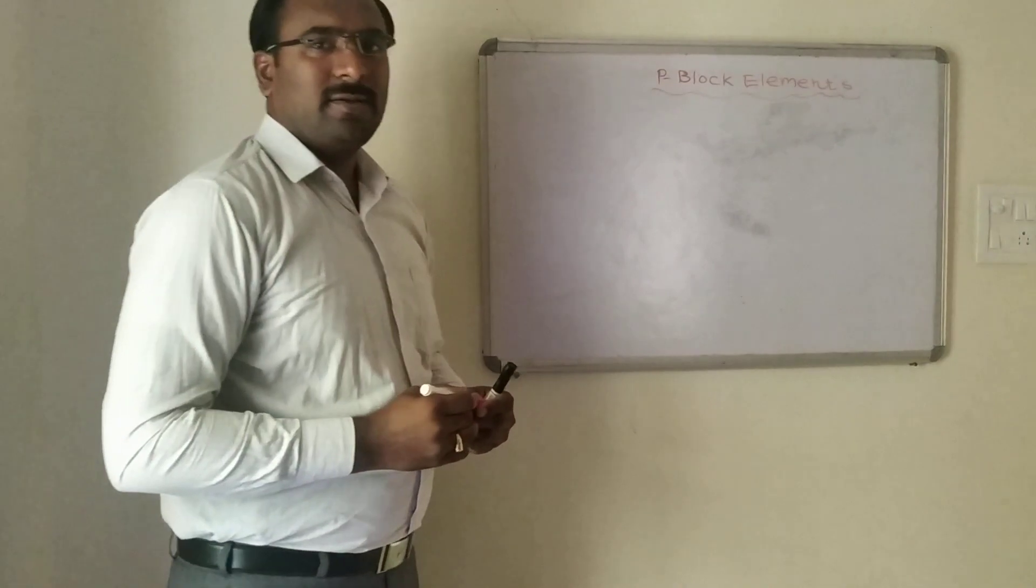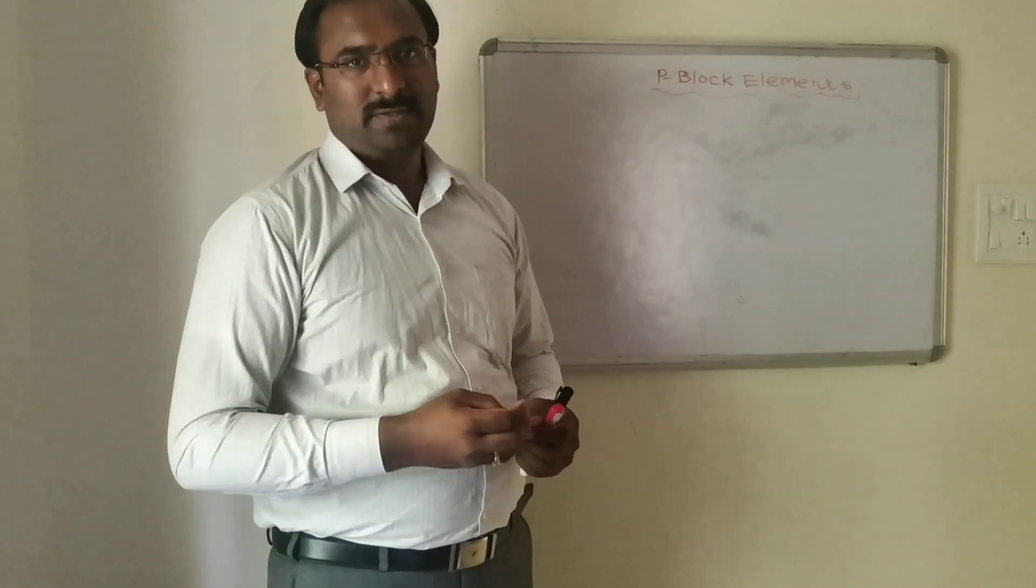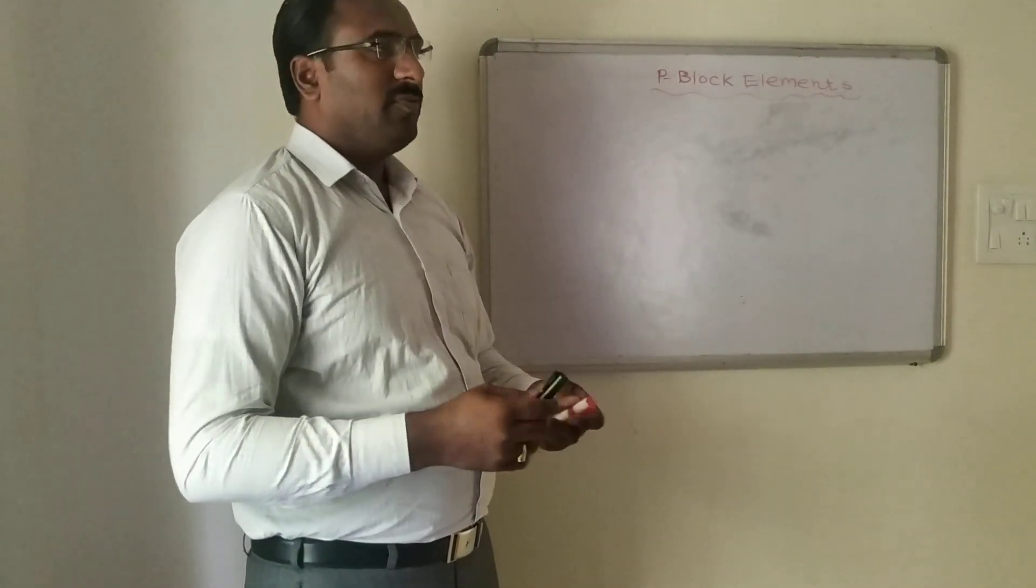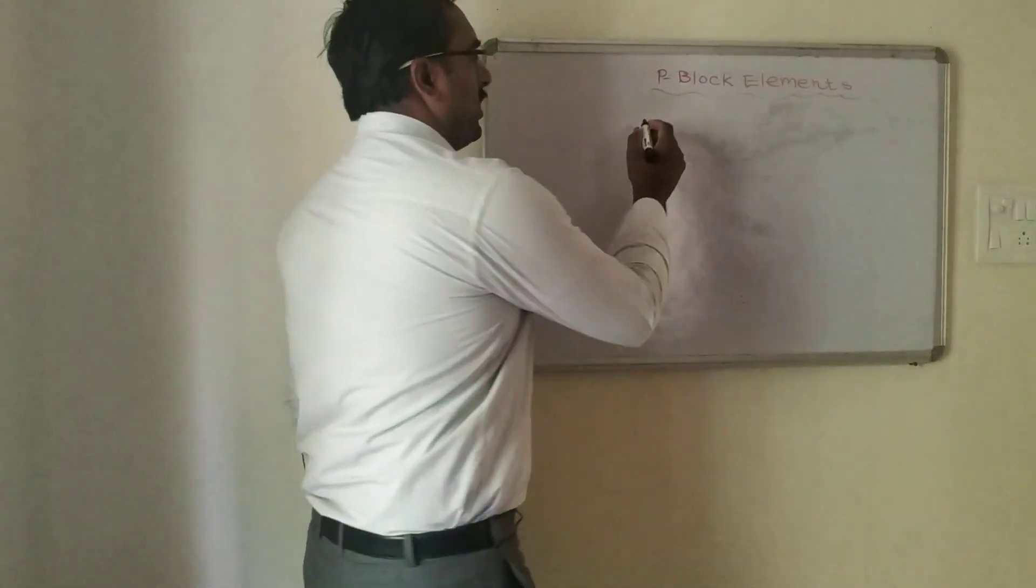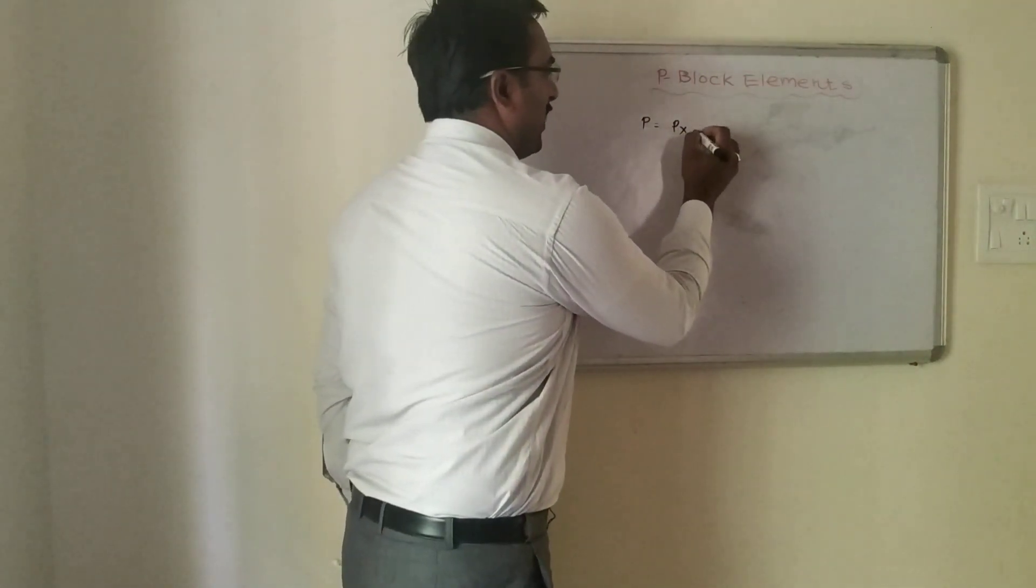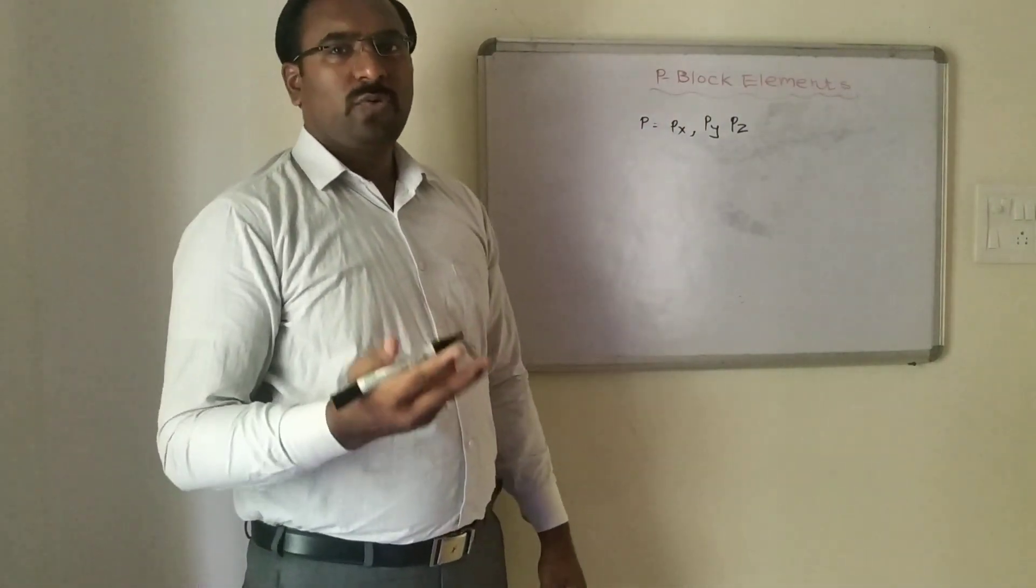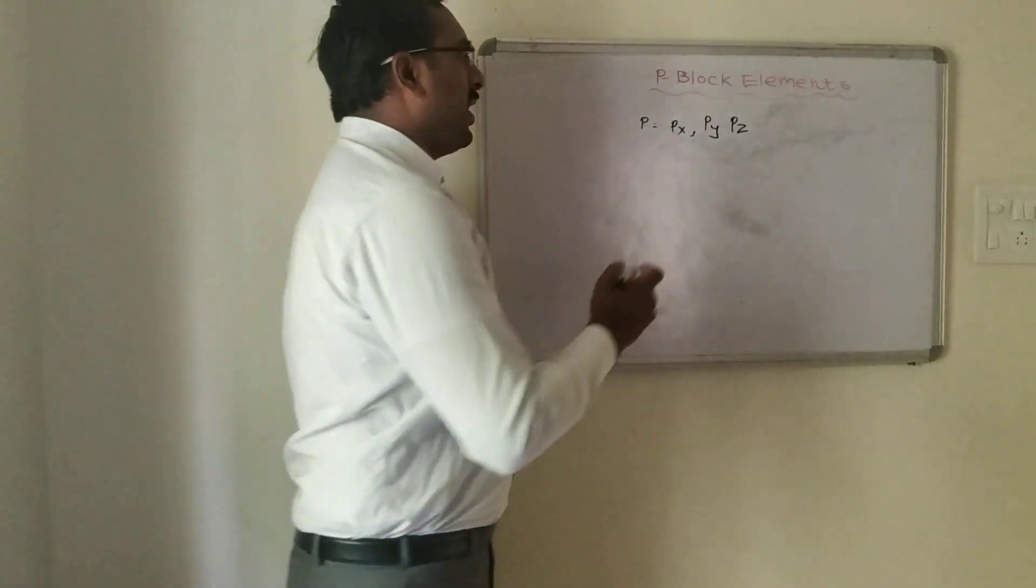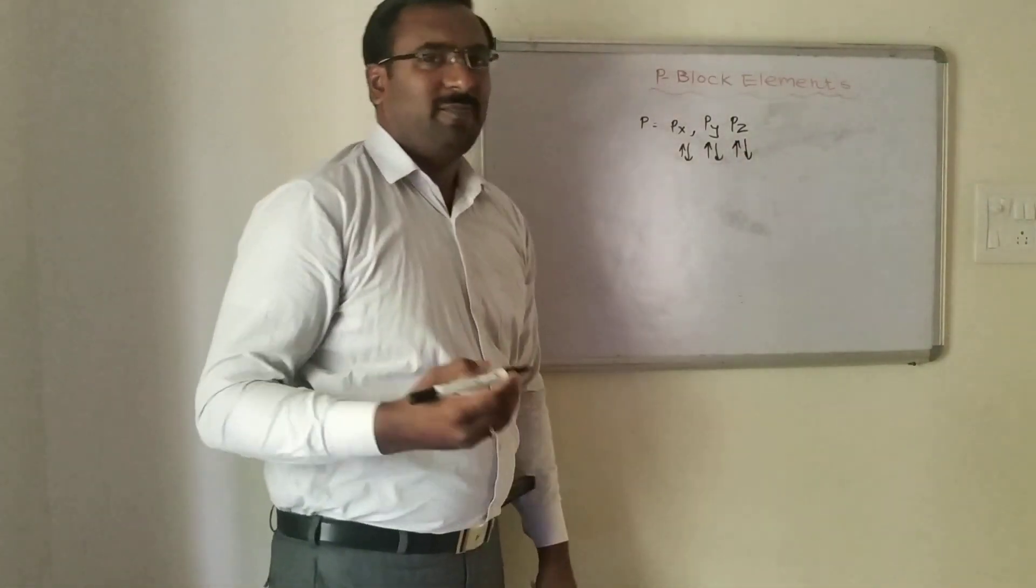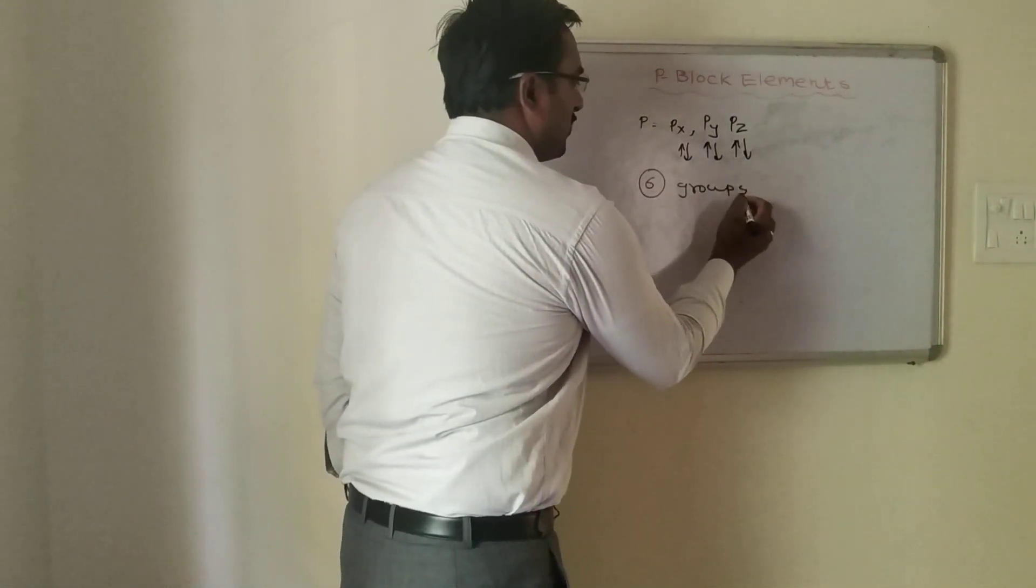We know that there are four blocks in the periodic table: s-block, p-block, d-block, and f-block. Among these various blocks, today we will learn about p-block elements. The p-orbital has three orientations: px, py, and pz. Each orientation carries two electrons. Therefore, the maximum electron carrying capacity for p-orbital is six. Six electrons can be accommodated in p-orbital, so there are six groups in the p-block.